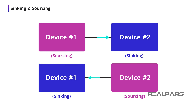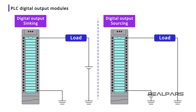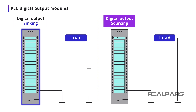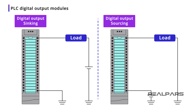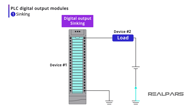Now that we've got that cleared up, let's move on to real-world devices where we aren't representing current flow using a single line drawing. PLC vendors manufacture both sinking and sourcing digital output modules. Let's explore what they are and how they differ. Keep in mind what we discussed earlier — it's all about the direction of conventional current flow.